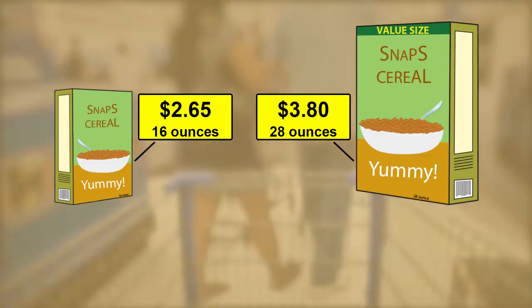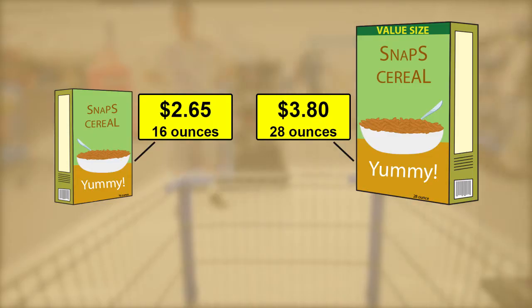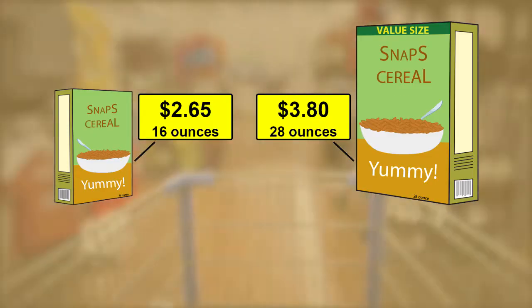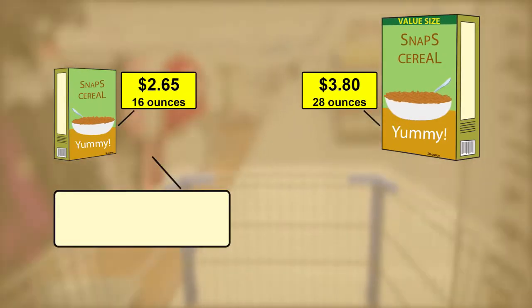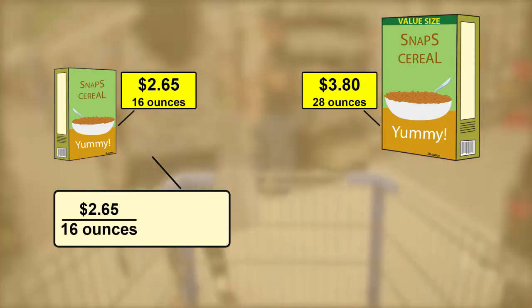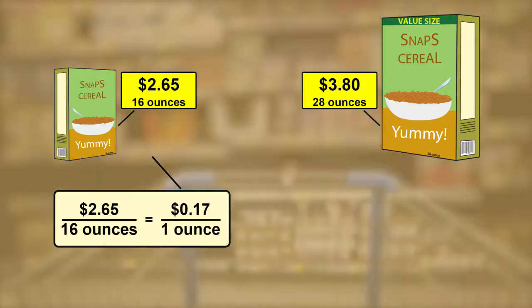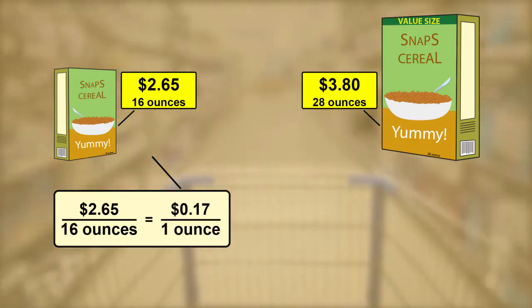Determining a unit rate of price per ounce can help you figure out which option is the real bargain. The unit price for the smaller box is $2.65 divided by 16 ounces. This equals about 17 cents per ounce.